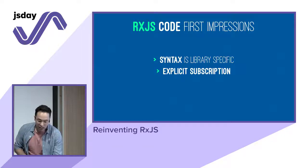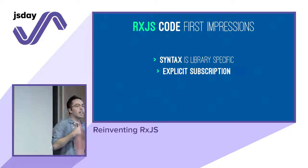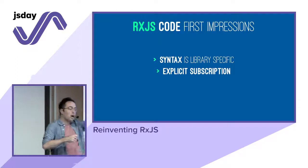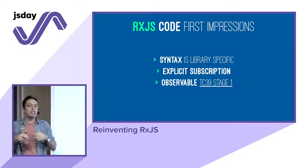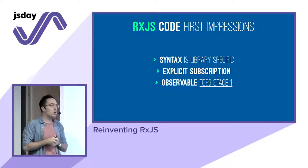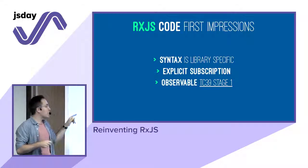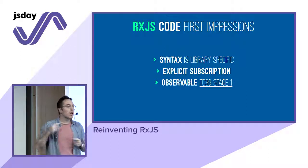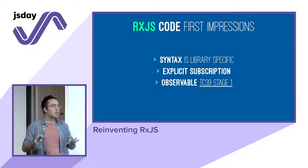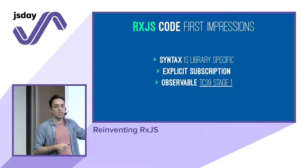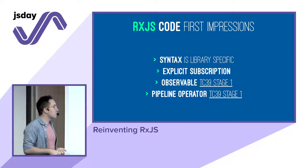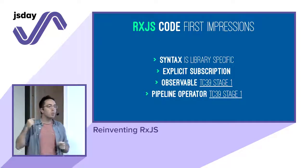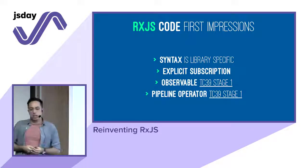Can you hear me in the back? Explicit subscription — we are telling the library what we want to happen after all the pipes, after all the numbers go through. Observable is something that is right now at TC39 stage one, which is where we all discuss new features of the language. That means today the syntax is library-specific, but if we do the same talk in one year, this could be plain JavaScript — features like the observable and the pipeline operator, which is very similar to the `pipe` method in RxJS.